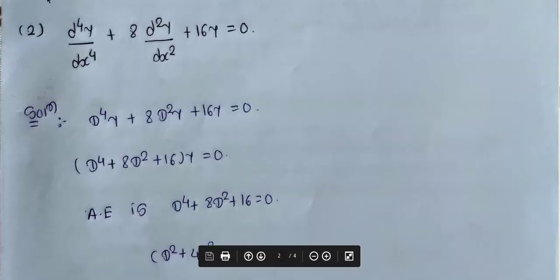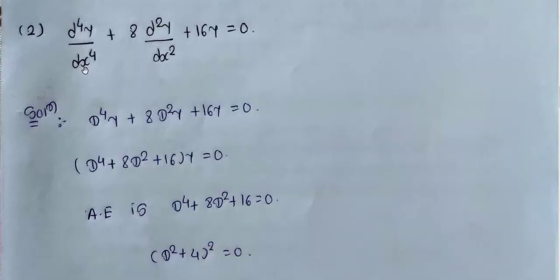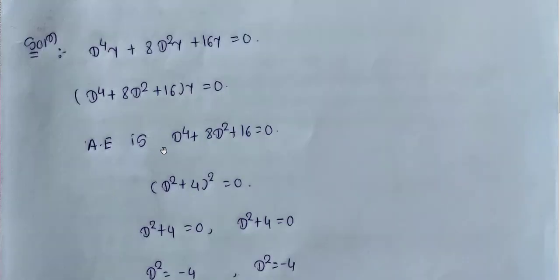Next example: d⁴y/dx⁴ + 8d²y/dx² + 16y = 0. In symbolic form this is (d⁴ + 8d² + 16)y = 0. The auxiliary equation is d⁴ + 8d² + 16 = 0.